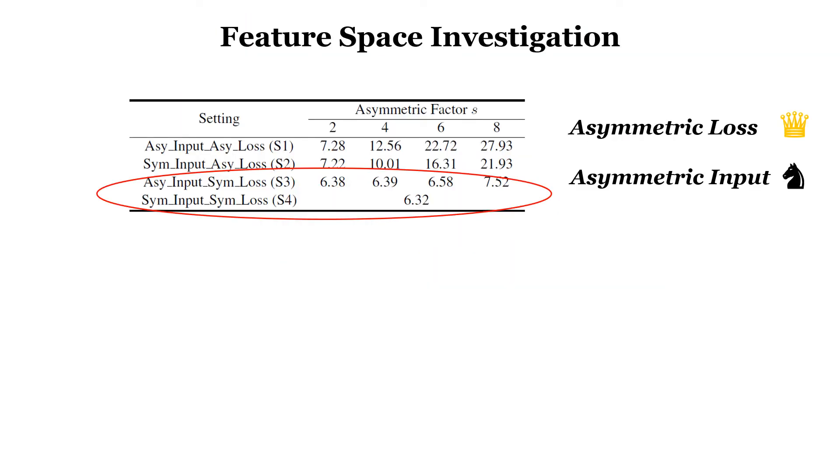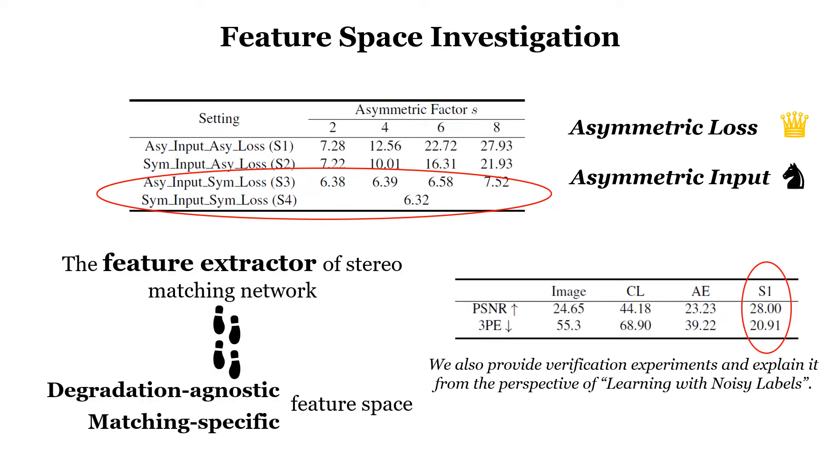Let us recall the previous conclusion. The asymmetry of inputs has a minor influence on asymmetric stereo matching. It reveals that the feature extractor of a stereo matching network performs well in extracting symmetric features from the asymmetric input. Therefore, we adopt the feature extractor to approach the desirable feature space.